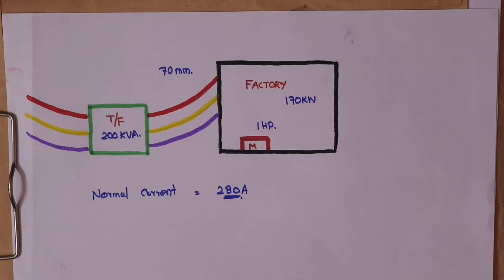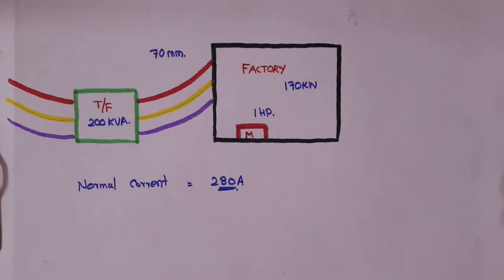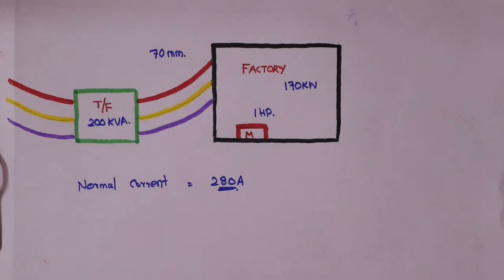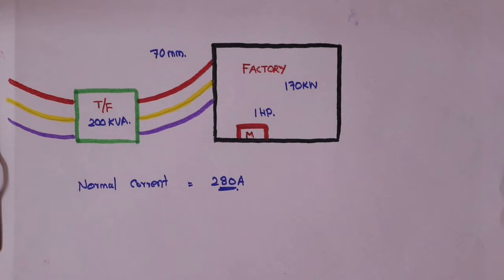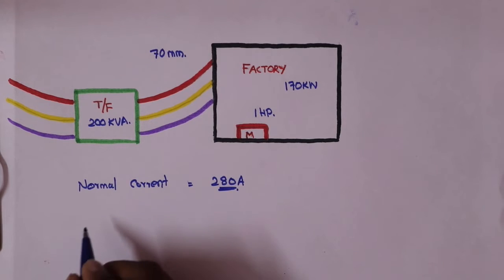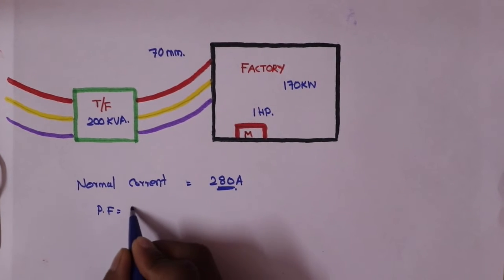Now, the most important things are changing. The company has started production. The company is running. We expected a certain current value, but we have not had that current value. This is because the power factor is 0.7. The power factor is equal to 0.7.